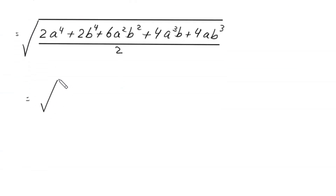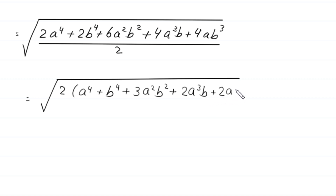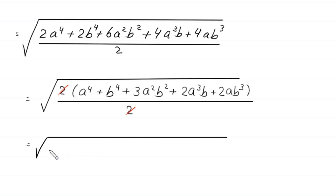From the numerator we can factor out 2, leaving a to the power 4 plus b to the power 4 plus 3 times a squared b squared plus 2 times a cubed b plus 2 times ab cubed, divided by 2. This 2 cancels, and the expression becomes the square root of a to the power 4 plus b to the power 4 plus 3a squared b squared plus 2a cubed b plus 2ab cubed.